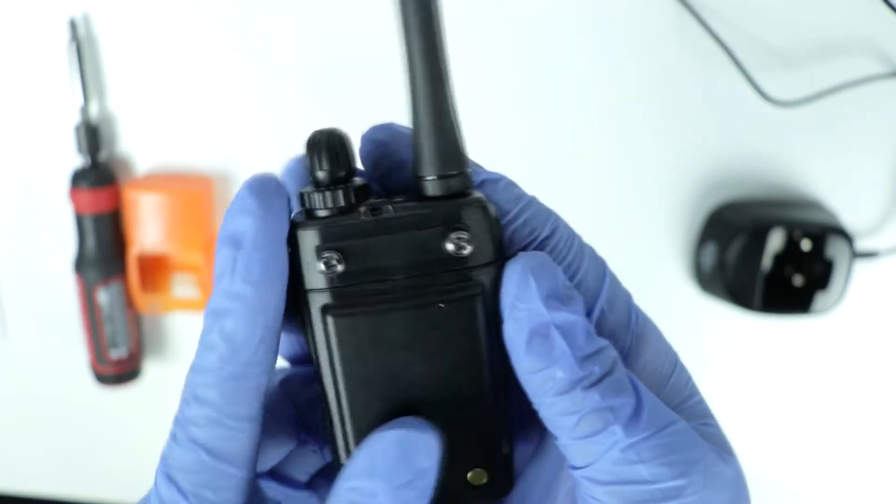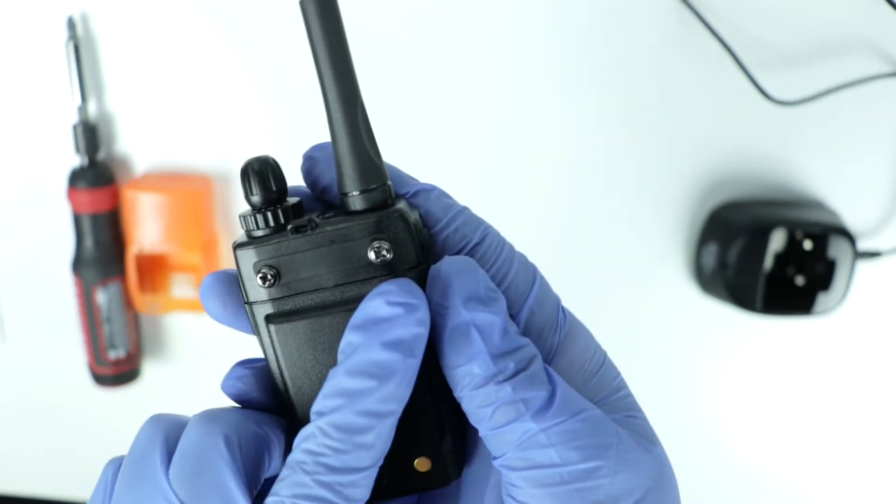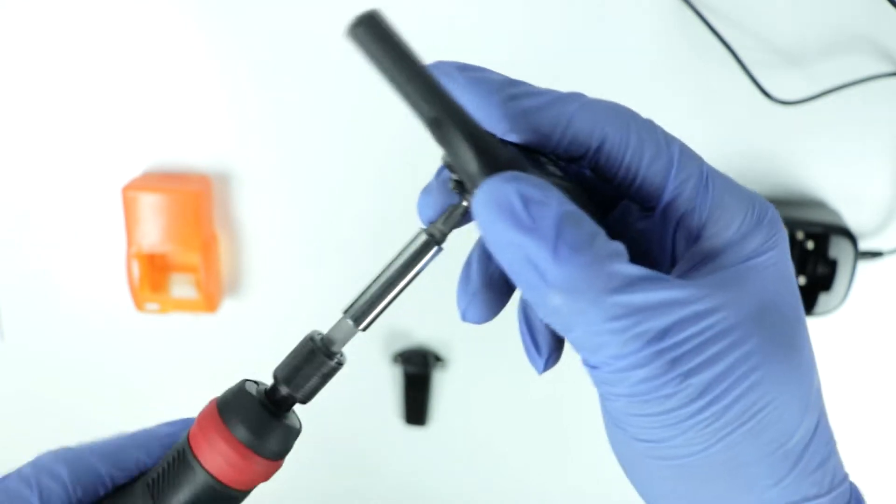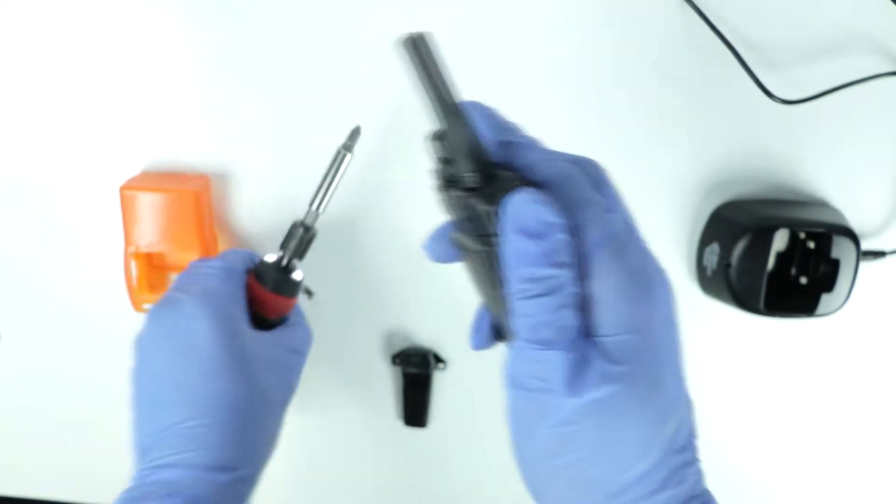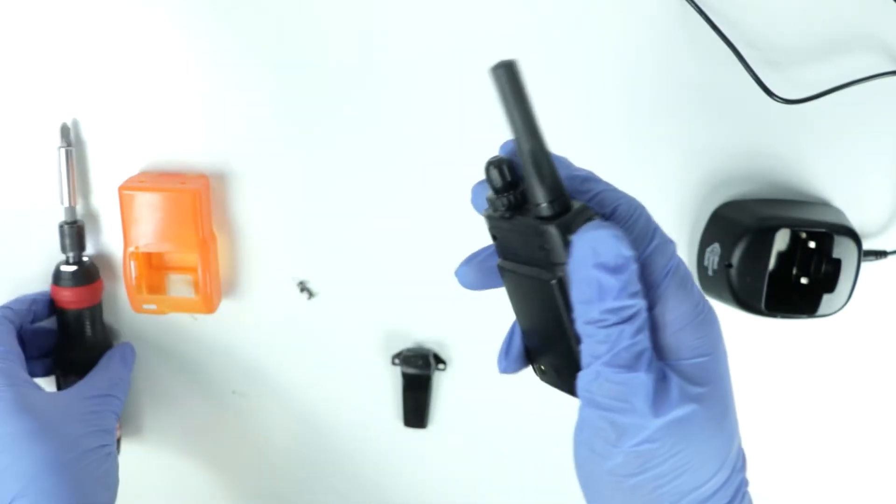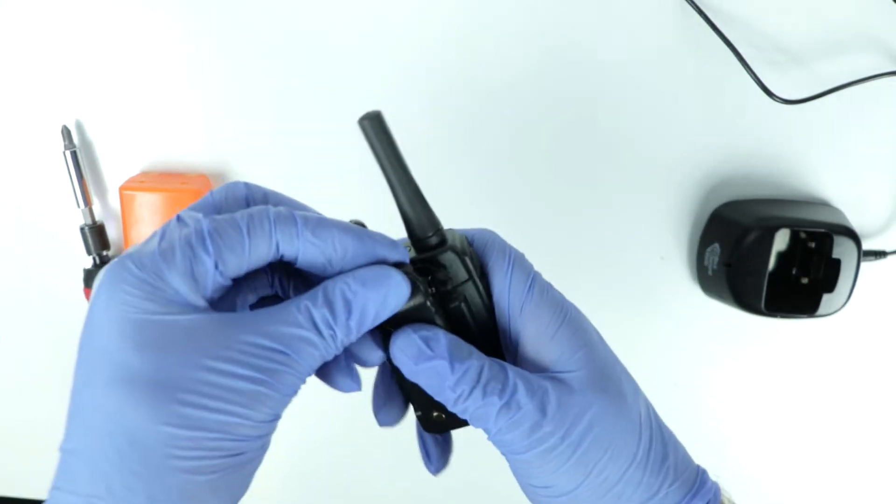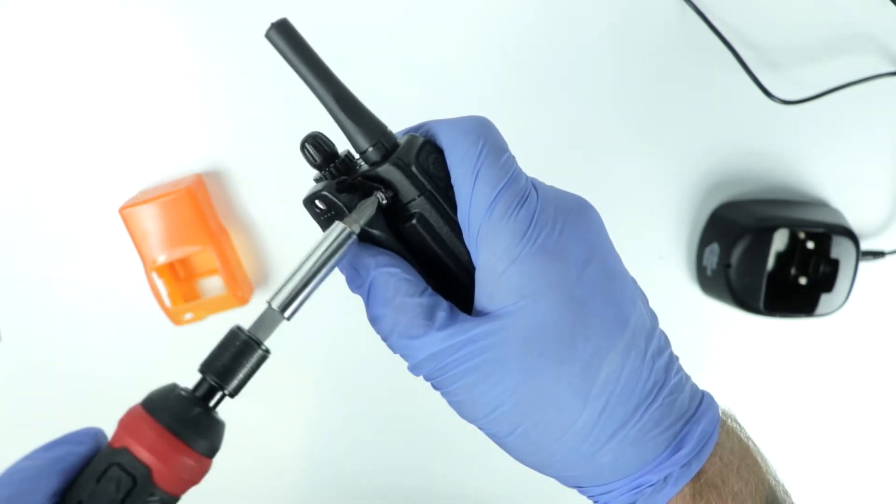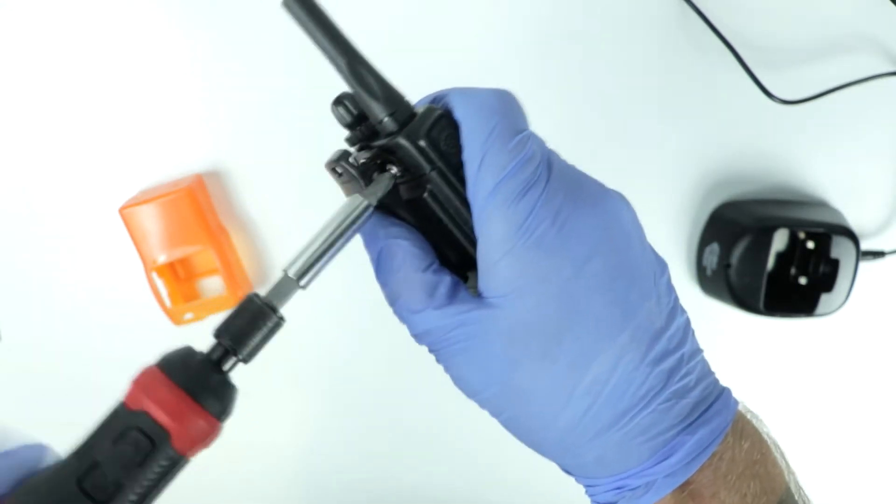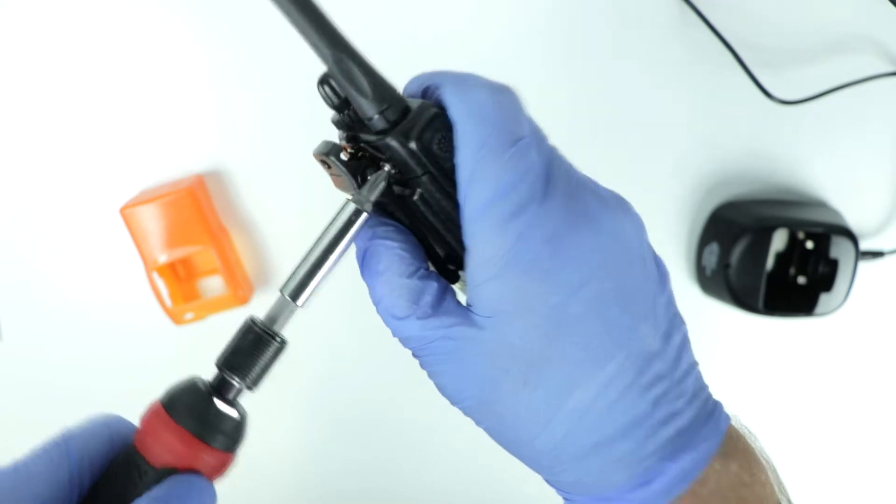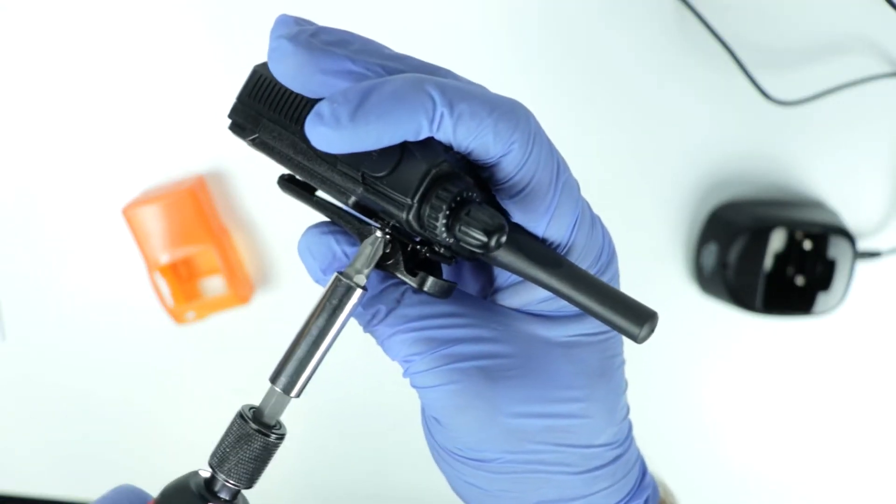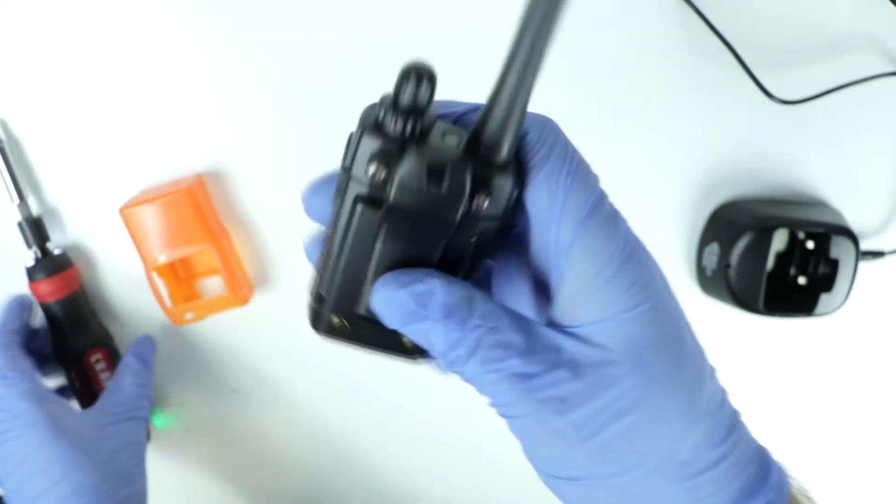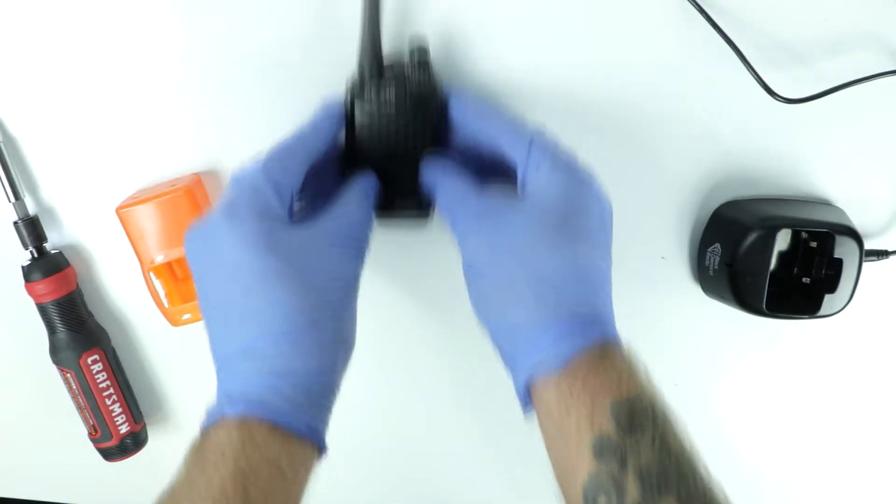Next we're gonna go ahead and install the belt clip. On the back of the radio you'll see there are two screws here. We'll just go ahead and take our screwdriver and remove both of those screws. Once we get the two screws out, we're going to take the belt clip and line it up with the holes. Once that's lined up, drop your screws back in and tighten them down. Don't crank down on these too hard, but you do want to make sure that they are fairly tight to ensure that they don't work their way out over time.